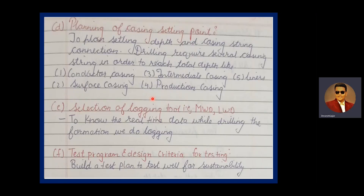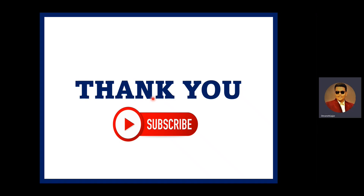Planning of casing setting points requires several casing strings to reach total depth — conductor casing, surface casing, intermediate casing, production casing, and liner — which will be discussed in further detail in upcoming lectures. The selection of logging tools, including MWD and LWD, provides real-time data during drilling. Thank you; if you like the video please subscribe. Have a nice day.